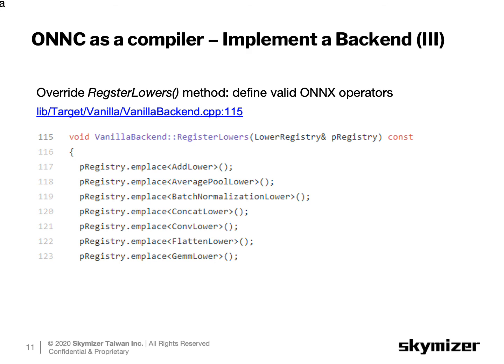Here is how the registerLowers method looks. The pass manager passes in an empty lower registry object to accommodate the legal ONNC IR set. In this code snippet, we register lowers for average pool, batch normalization, and other operators. If there is an unregistered ONNC IR in the input model, compilation will terminate with an unsupported operator error message. At the end of this session, we will demonstrate how to create a new backend step-by-step; please refer to lab 3 in the ONNC tutorial repository for more details.